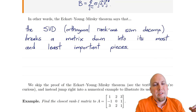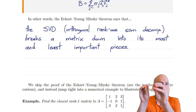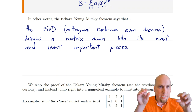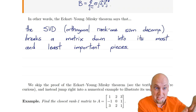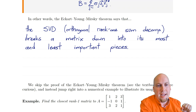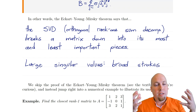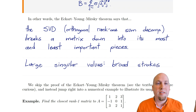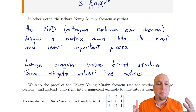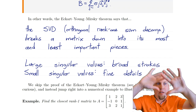The term sigma_1 times U_1 times V_1 star is the most important rank-one piece of A; sigma_2 times U_2 times V_2 star is the second most important, and so on, all the way down to singular values that are zero — those pieces are just zero matrices. So it creates a hierarchy: this is a very important piece of A, this is the next most important, and so on. The large singular values provide the broad strokes of the matrix — the rough shape — while the small singular values fill in the tiny fine details.